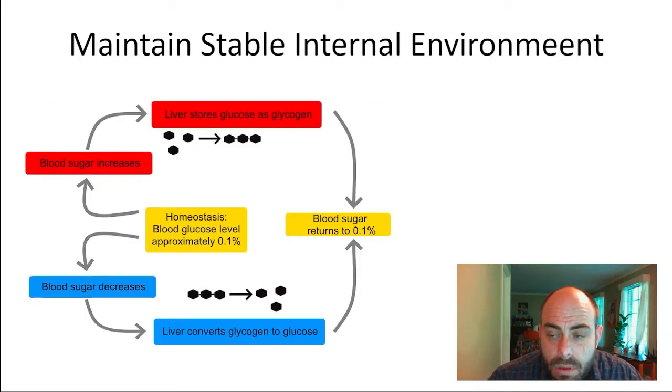All organisms or all living things maintain stable internal environments. There's a word for this, it's called homeostasis. Homeostasis is the state of an organism at its quote-unquote normal levels. So you have a normal temperature of 98.6 or thereabouts. Your body is non-stop trying to keep that temperature the same.